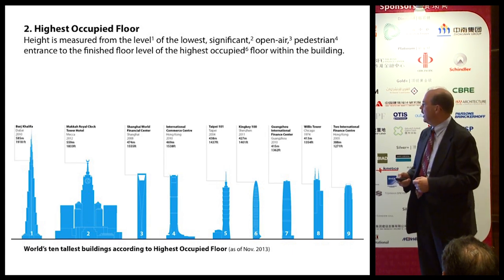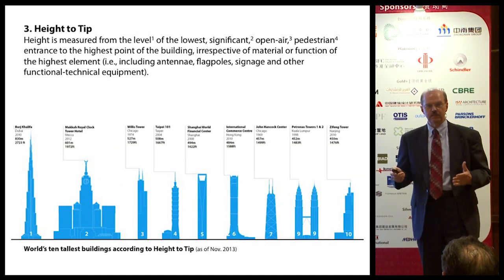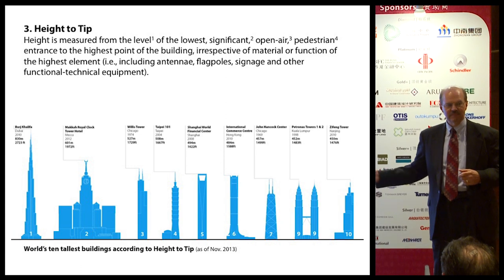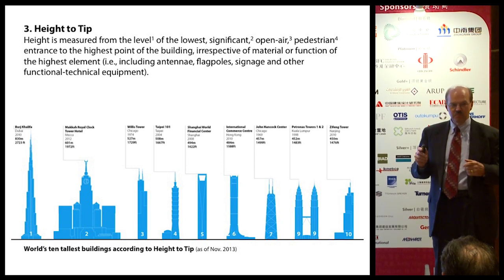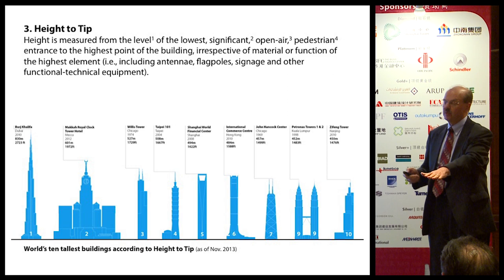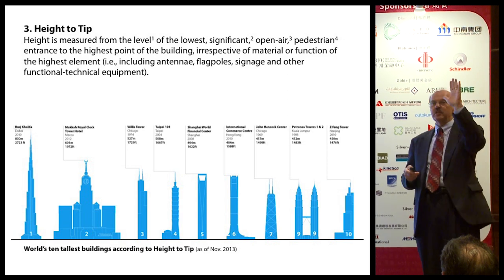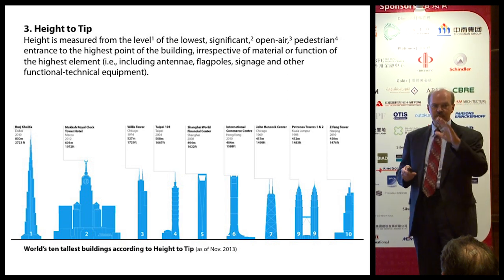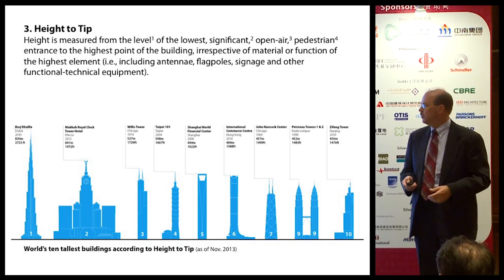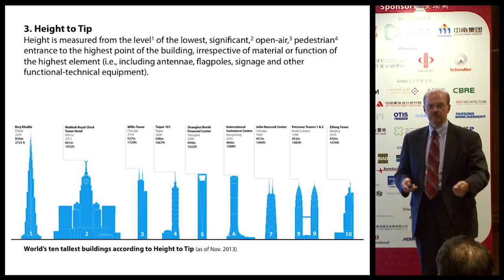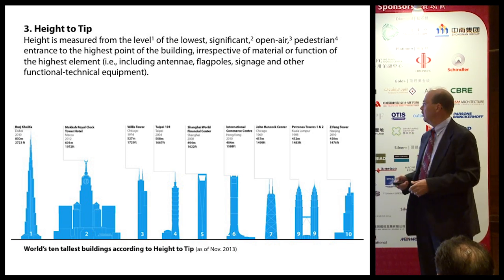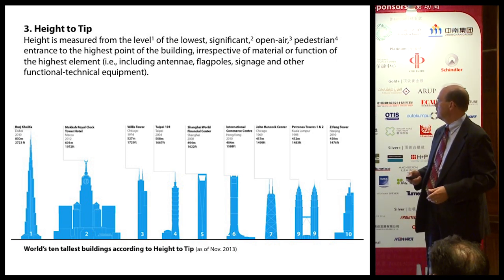The third measure is height to tip, and this is the one that gets people emotional, because this is what you actually see. When you look at a building, you see the bottom and you see the top, and the top for all intents and purposes is the height to tip from a visual standpoint. That includes everything — flagpoles, cooling towers, signage, all sorts of stuff that can be at the top of the building.